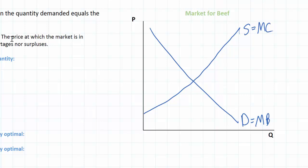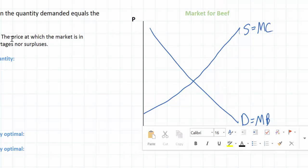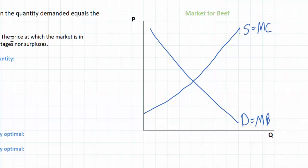Looking at the supply and demand for beef in this market, it's easy to see where the equilibrium price and quantity are. Equilibrium price is the price at which the quantity demanded and the quantity supplied are equal — in other words, where supply and demand meet. We'll call that PE for price equilibrium. The quantity lies directly below this intersection and we'll call that QE for equilibrium quantity.